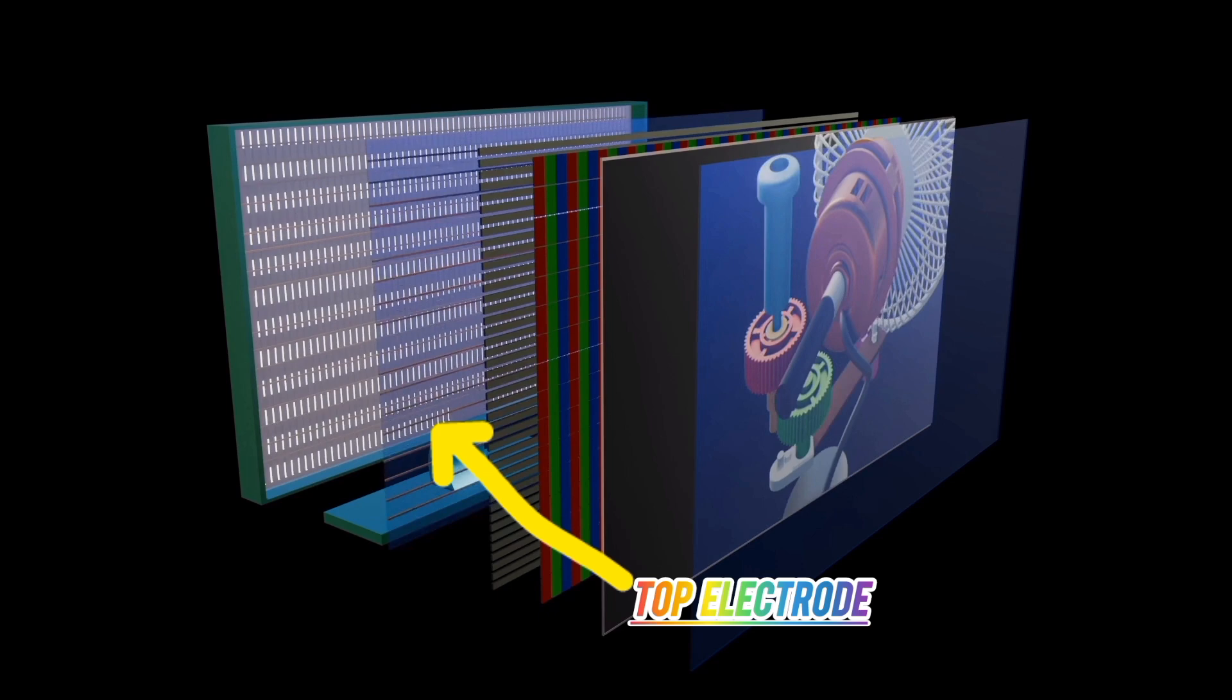This is a transparent conductive layer, often made of indium tin oxide, that applies an electric field to control the behavior of liquid crystal molecules below.